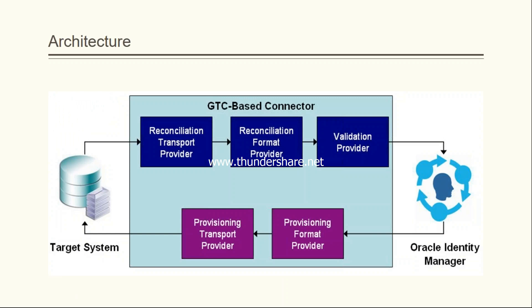Let's understand the GTC and how it is going to work. This is the complete architecture of the Generic Technology Connector. We have a target system and we have OIM. Using GTC we can provision users, meaning we propagate the user from OIM to the target system, or we can reconcile — which is completely opposite to provisioning — bringing the user from the target system to OIM.